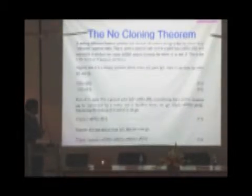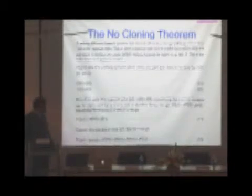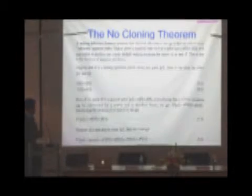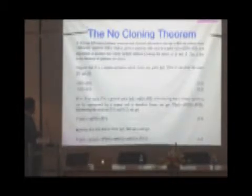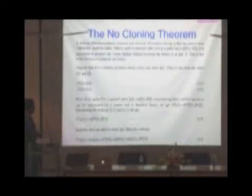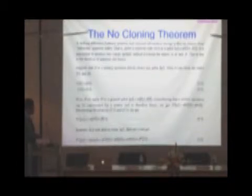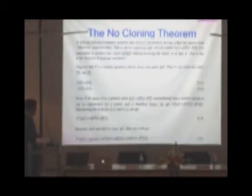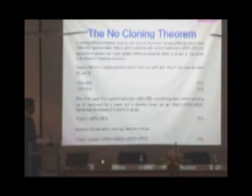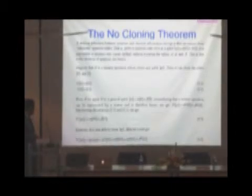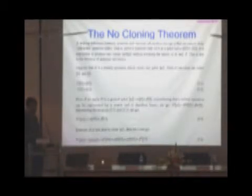Suppose that U is a unitary operator which clones any qubit |χ>. Then U can clone the states |0> and |1>: U|0> = |00> and U|1> = |11>. Now if we apply U to a general qubit, what we get is U|χ> = α|00> + β|11>. However, if U was able to clone |χ>, we should have got |χ>|χ>, which expands differently. These two expressions are clearly not equal, so you cannot clone quantum information.